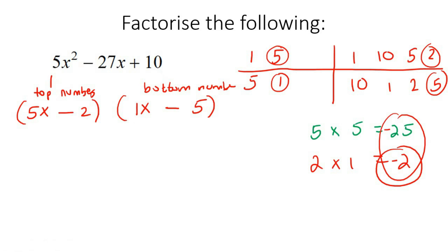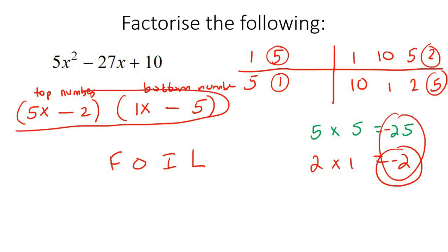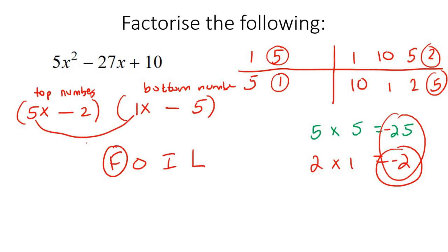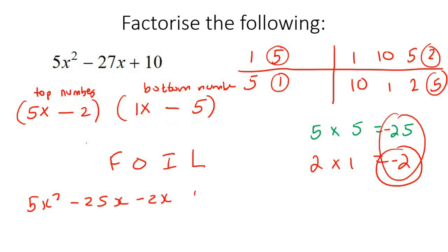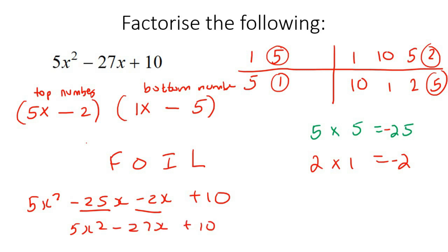We're done. Let's just verify by using FOIL. First times first: 5x squared. Outer numbers: negative 25x. Inner numbers: negative 2x. Last times last: positive 10. There's our negative 25x and our negative 2x, and if you combine those you get negative 27x — exactly what we had in the beginning. So these two brackets are correct.